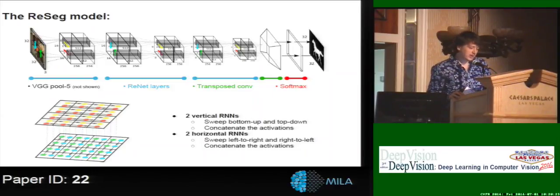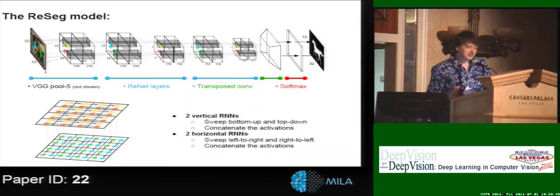Finally, we apply a transposed convolution to do the upsampling and go back to the original resolution of the image, and the softmax.